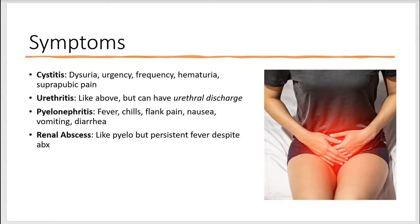What are some symptoms? Patients can present with dysuria, urinary urgency, frequency, hematuria, and suprapubic pain. In patients with urethritis, we have similar symptoms as UTI, but they can also have urethral discharge. In patients with pyelonephritis, these patients have fevers, chills, flank pain, nausea, vomiting, and sometimes diarrhea.